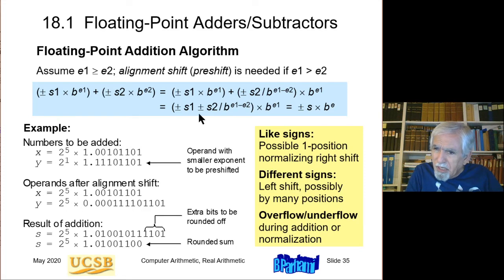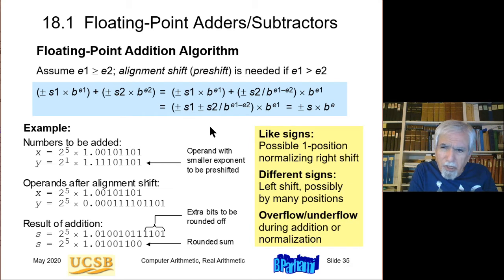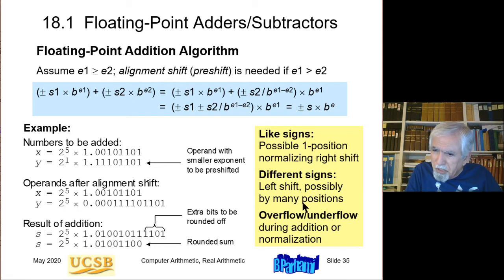If the two numbers have different signs, we may need a left-shift, because adding a positive to a negative number produces a result smaller than either operand. If the two numbers are close to each other in subtraction, the result can be arbitrarily close to zero. Therefore I may need a left shift by many positions, and the normalizing shift will be to the left, involving many positions depending on how small the value gets.